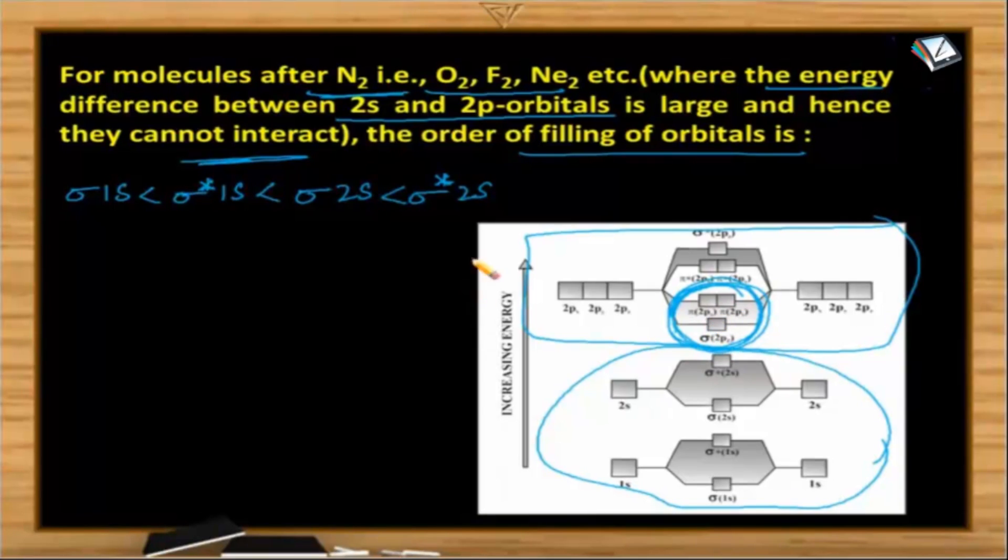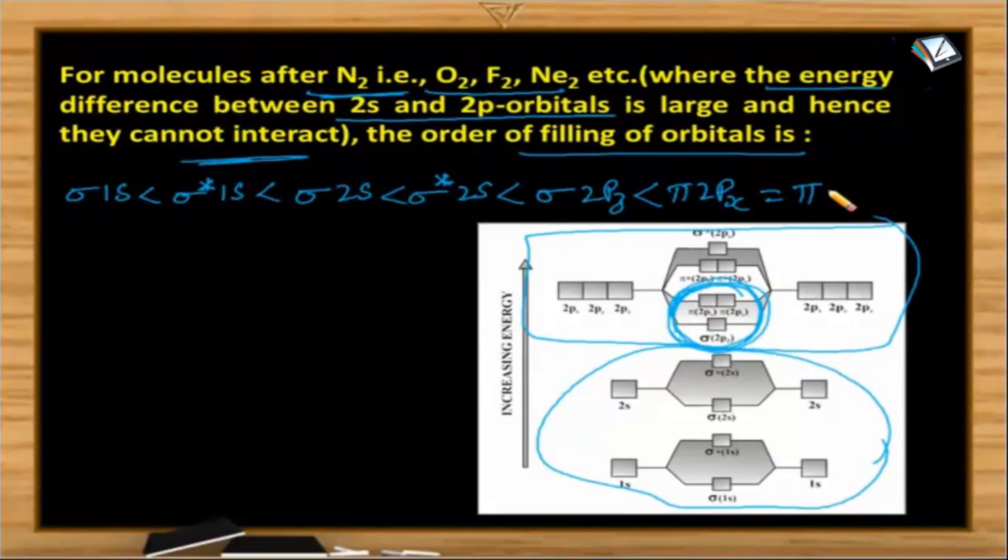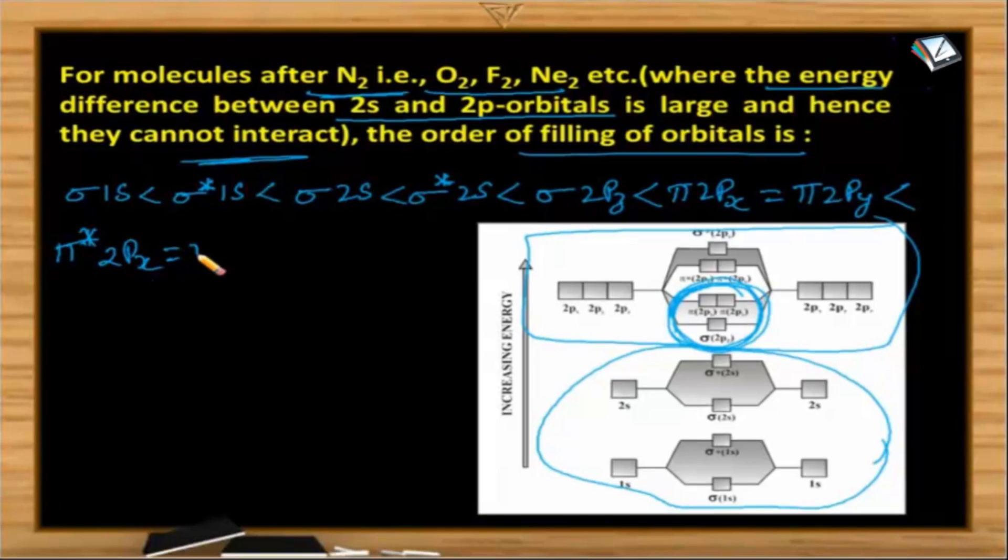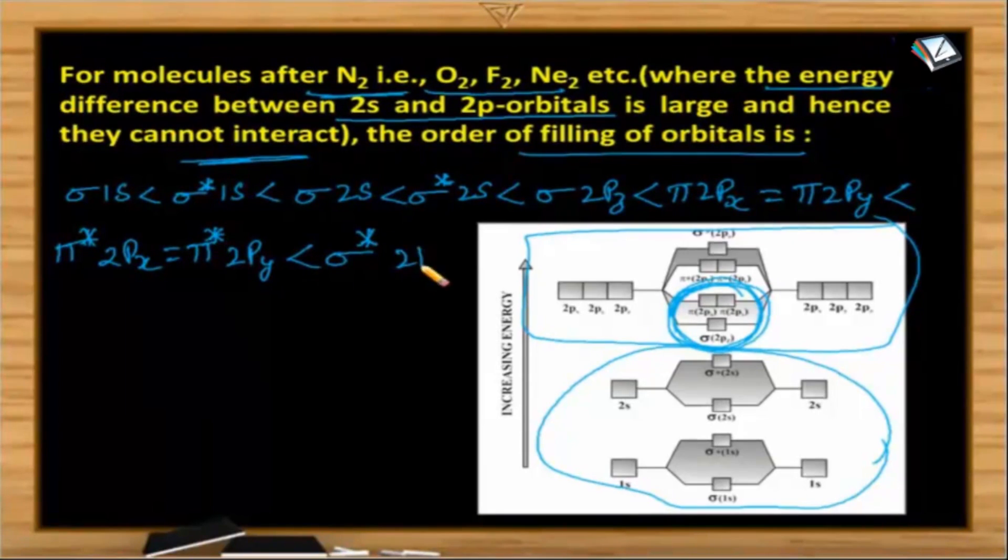Up to nitrogen this comes here and this comes here. But here it is just opposite. So after sigma star 2s next comes sigma 2pz which is less than pi 2px which is equal to pi 2py and which is less than pi star 2px which is equal to pi star 2py which is less than sigma star 2pz.